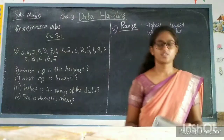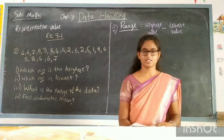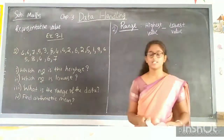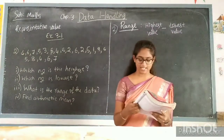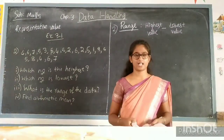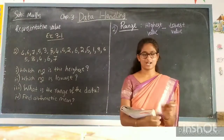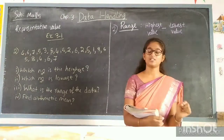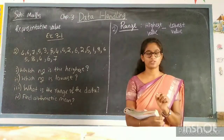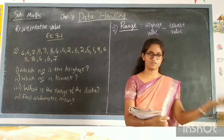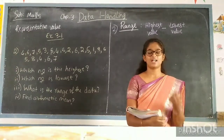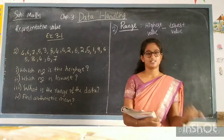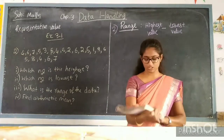Let us solve some problems related to arithmetic mean and range. In exercise 3.1, the first question asks: find the range of heights of any 10 students of your class, and find the arithmetic mean of those 10 students. What you have to do is collect the heights of 10 students — your friends' heights — add them up and divide by 10 to get the arithmetic mean of your classmates.